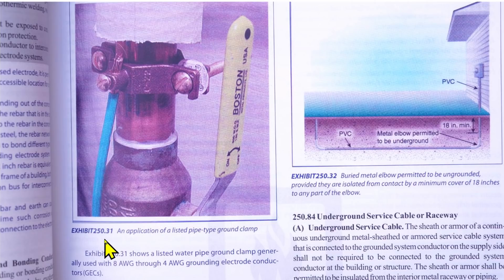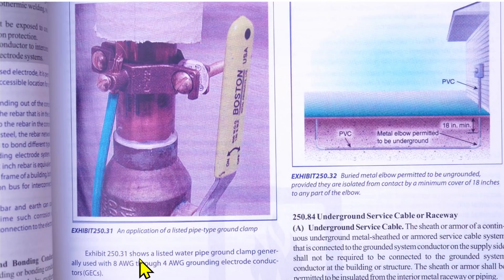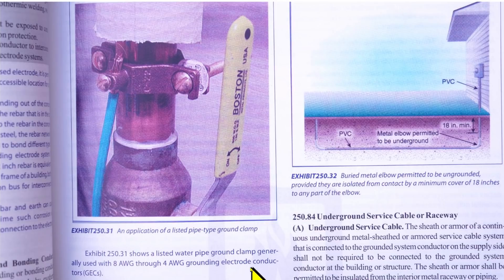This is Exhibit 250.31 from the 2020 NEC handbook. It says Exhibit 250.31 shows a listed water pipe ground clamp — that's right here — generally used with 8 AWG through 4 AWG grounding electrode conductors, or GECs. That's a simple example of a GEC.